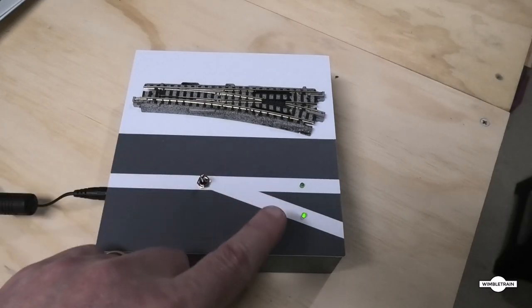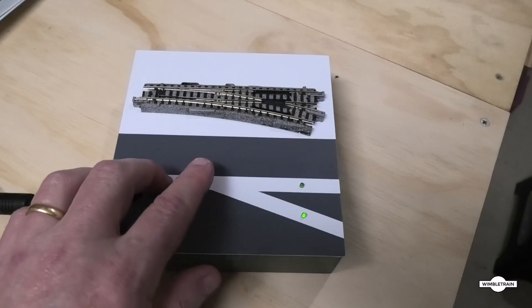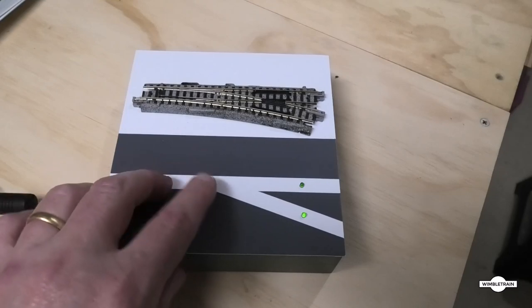So first off we can just see the bottom LED there and the switch is in the diverging position, and we just flick it across and that all works.